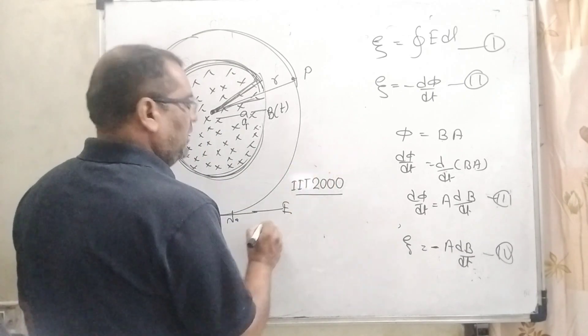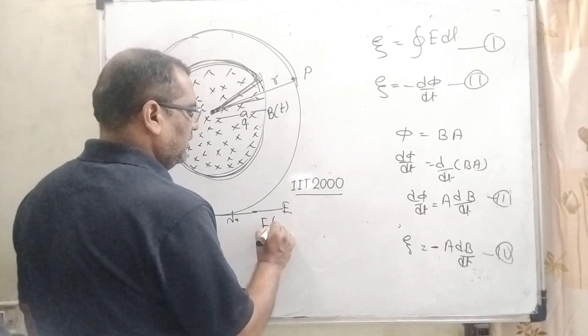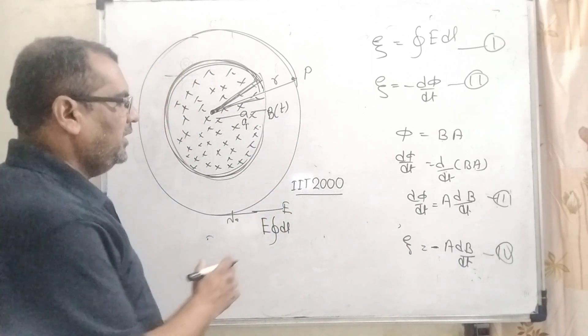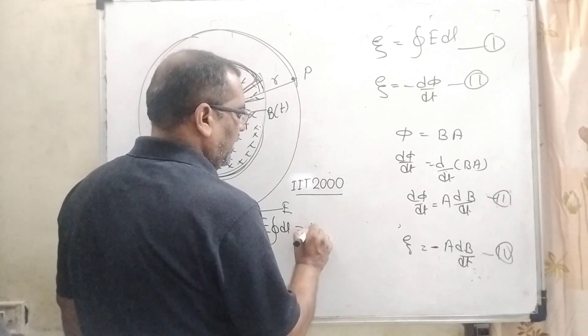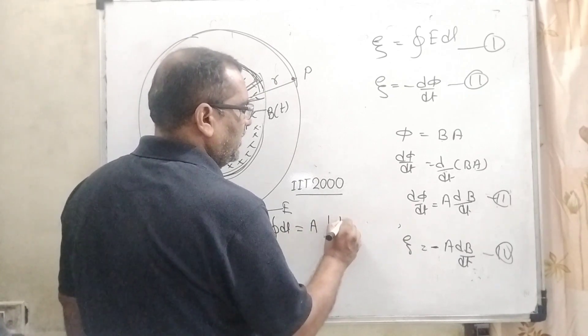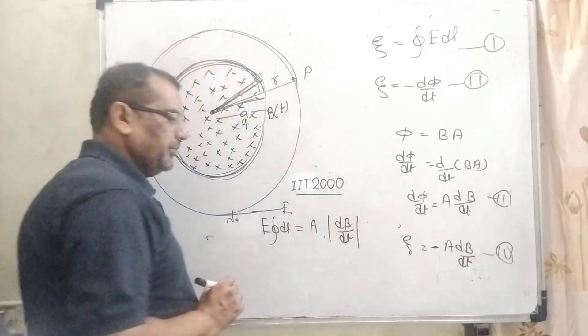Since E is constant over the path, ∮E·dl becomes E·∮dl. This equals the induced EMF in modulus: |A·dB/dt|, taking all results as positive.